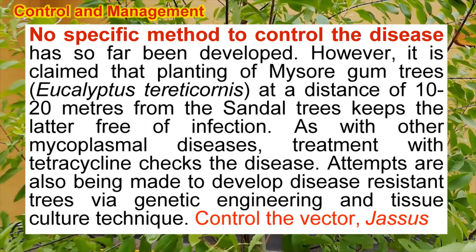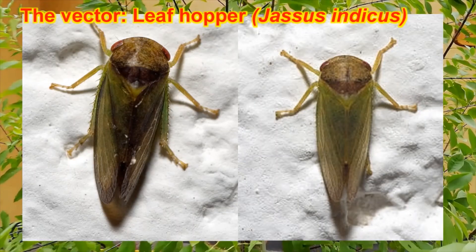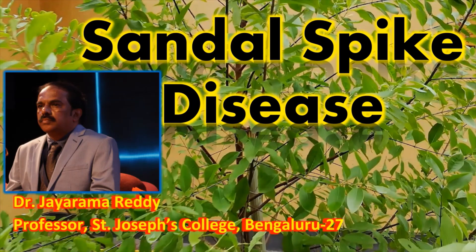Attempts are being made to develop genetically engineered plants that may develop disease resistance. So far there are no disease-resistant varieties available, and research is underway to develop them. The best current method is to control the vector Jassus indicus, which is known to spread this disease. Thank you very much for watching this video.